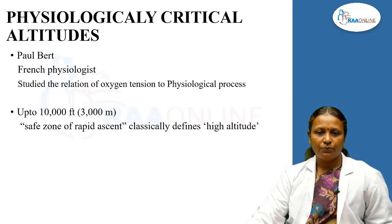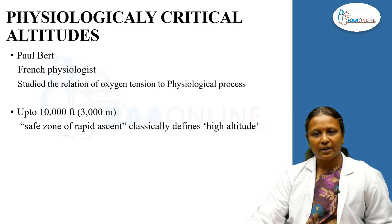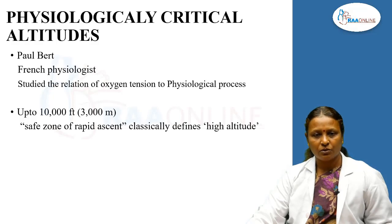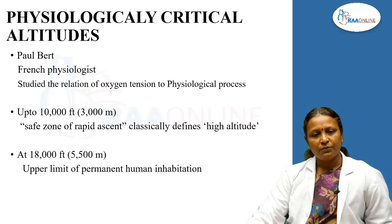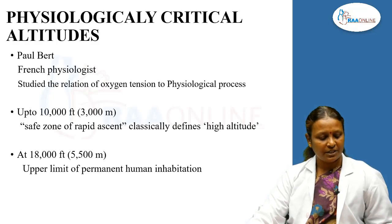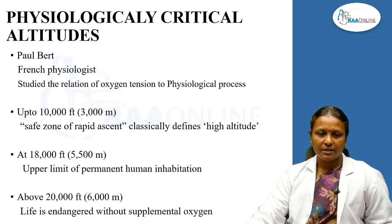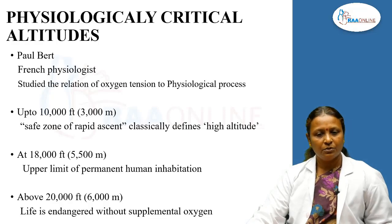Up to 10,000 feet — about 3,000 meters — we call it the safe zone of rapid ascent. This classifies the high altitude. Most of our activities occur within this height. At 18,000 feet, that is around 5,500 meters, it is the upper limit of permanent human inhabitation. Beyond this, life is endangered and without oxygen supplementation it is very difficult to survive.